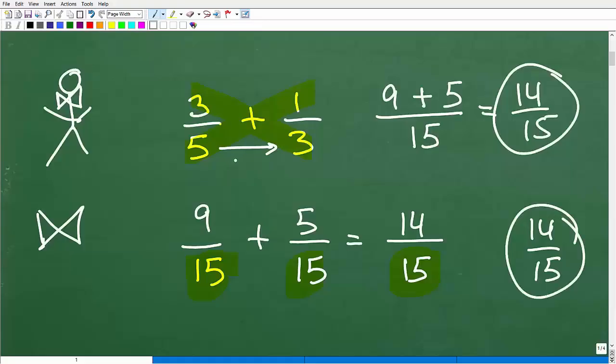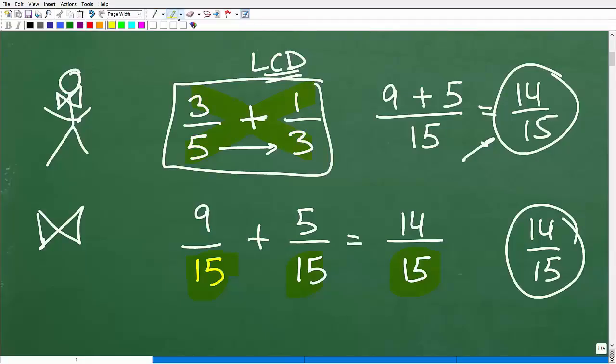Now the bow tie method here works on every addition and subtraction problem with fractions. The only disadvantage is sometimes you may not have a fully reduced fraction, so you're going to have to take that additional step. But if you forget how to find the LCD and you're like, I'm completely lost, well if you remember this technique, then you'll be good to go for adding and subtracting fractions because typically that's where most people struggle with fractions is finding the LCD. But this little technique here will bail you out every time. So remember this.